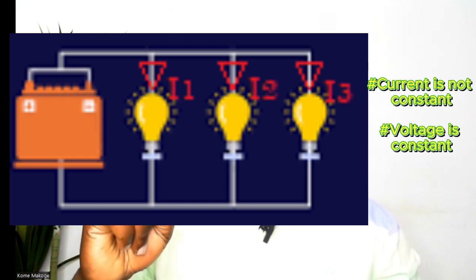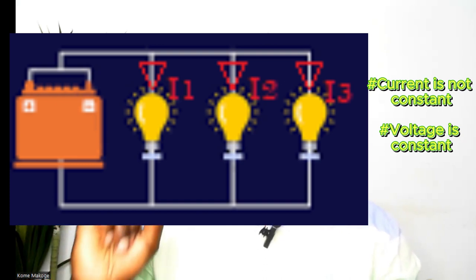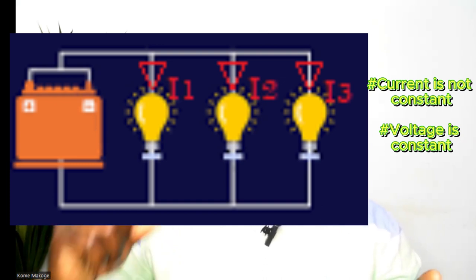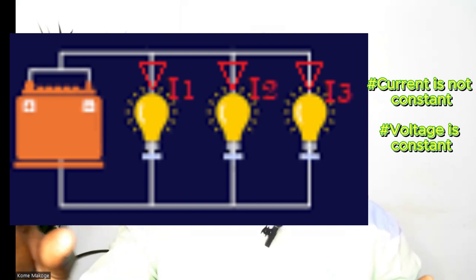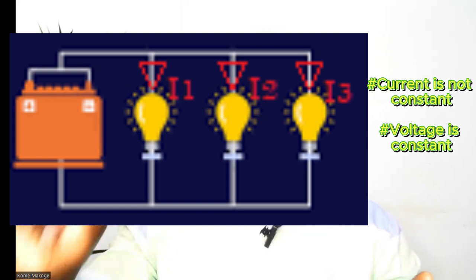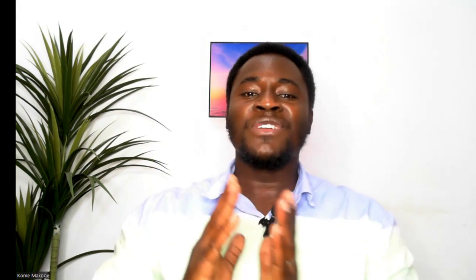In the case of a parallel circuit, the voltage is identical. The voltage at the source will be the same voltage found across each of the respective loads or light points as they are connected. So now we've understood what a series circuit and a parallel circuit are, and we can start doing our connections.